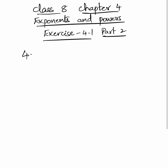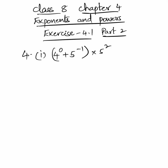We are going to the fourth question. Simplify and give reasons. First part: 4 power 0 plus 5 power minus 1, into 5 square, into 1 by 3.